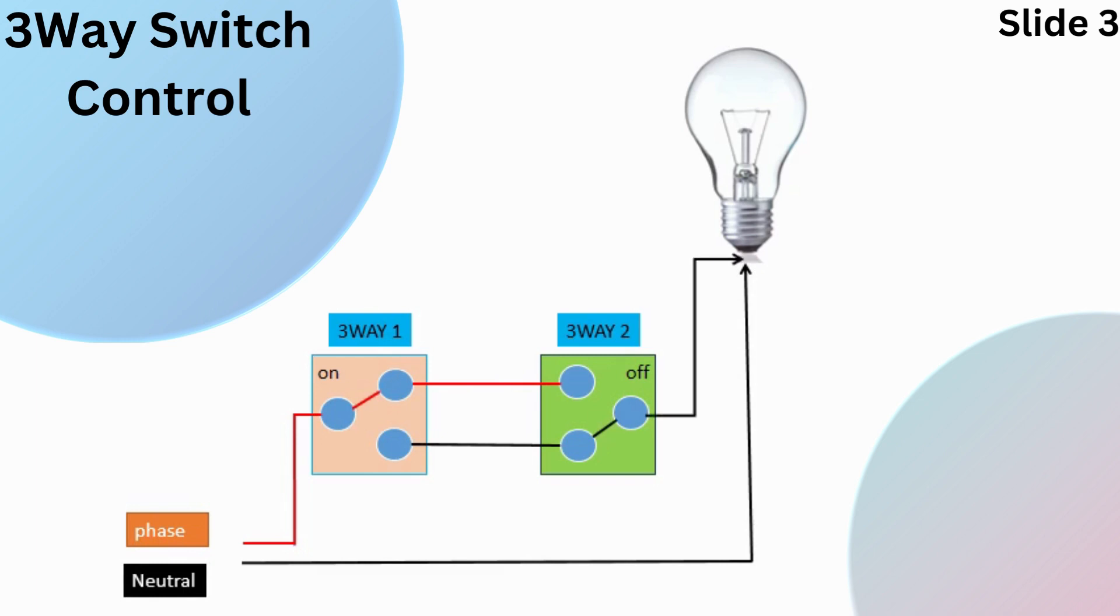At the second switch in location 2, which is in the off position, it breaks the electrical circuit, disconnecting the traveler wire from the common terminal. The light fixture remains off because there is no closed circuit to allow electricity to flow to the light.